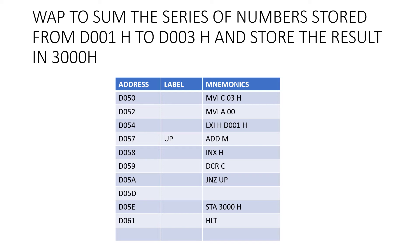MVI C, 03H — we take 03 because we want to repeat three times. MVI A, 00 — the first time we are adding memory content to the accumulator where the accumulator contents are 00. Then we increment, decrement C, and go back to add. We are adding D001 and D002; again decrement C and go back, adding D001 plus D002's result to D003. When C becomes 0, we don't go back because of jump on no zero. So if C becomes 0, we go to STA to store the result; otherwise we repeatedly go back to add memory. The addition result in the accumulator is stored at 3000.